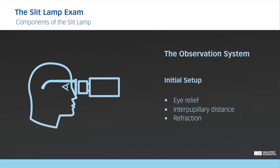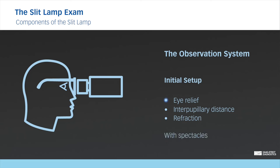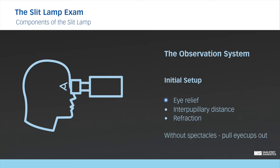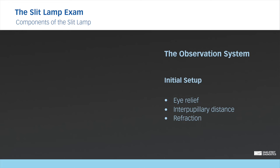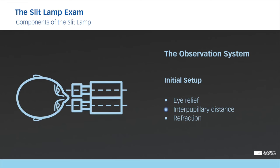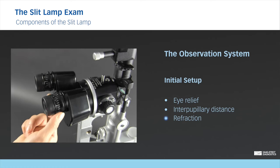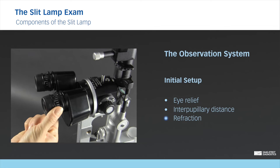Before examining a patient, the eyepieces should be individually adjusted. If you wear spectacles while using the slit lamp, push the eye cups in. If you do not wear spectacles while using the slit lamp, pull the eye cups out. This ensures that the distance between the ocular and your eye is ideal. Then adjust the binocular to your interpupillary distance. Finally, your refraction and accommodation should be neutralized by setting the eyepiece.